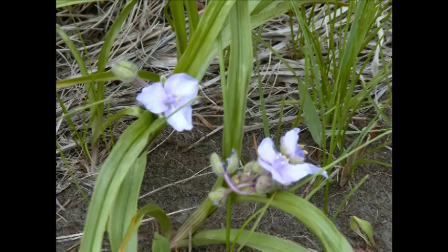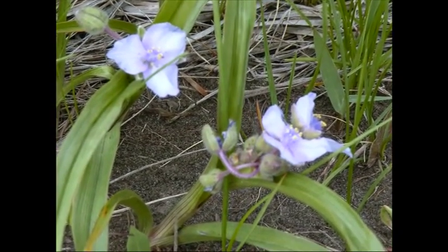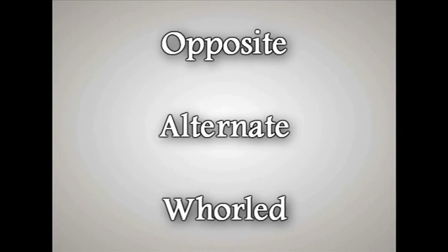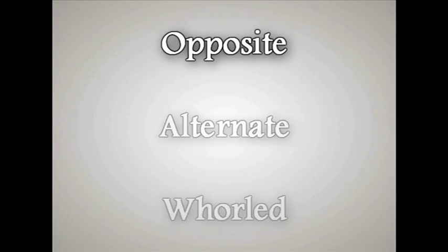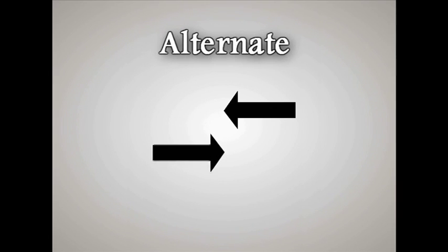The next step is to figure out how the leaves are attached to the plant stem. This is called leaf attachment. Leaf attachment may be opposite, alternate, or whorled. Opposite leaf attachment consists of leaves attached to the stem opposite of each other. Alternate leaf attachment consists of leaves alternately placed on each side of the stem. Whorled leaves are attached around the stem.